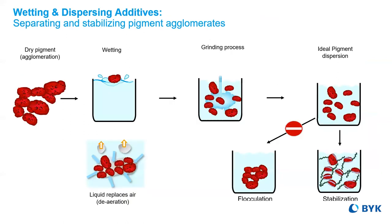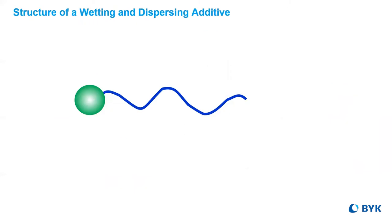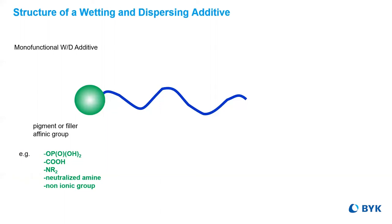The time and energy it takes to disperse pigments needs to be consistently rewarded with properly stabilized pigments, and this should always be the endgame. Most wetting and dispersing additives contain two basic parts: pigment affinity for adsorption to the pigment particles, and a compatibilizing unit, or a flexible portion that is compatible to the resin-solvent matrix.